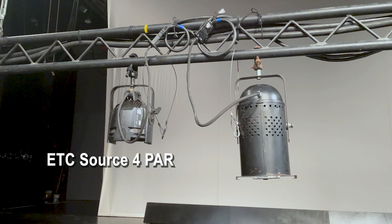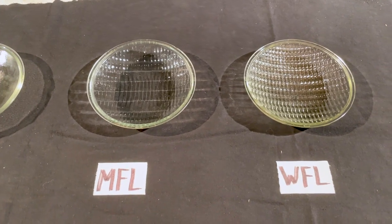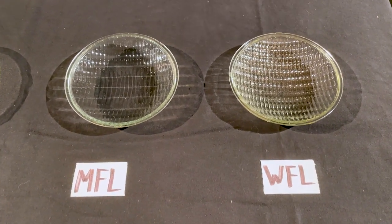Here we have an ETC Source 4 PAR and a PAR-64. PARs are primarily used for broad color washes as well as top light or backlight. By using a variety of lenses or lamps, the beam of the PAR can be changed according to what is needed. The most used are medium flood and wide flood lenses. The grid on the lens is what gives the beam its oval shape.